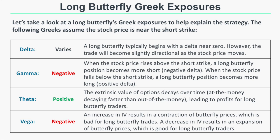Now let's discuss the Greek exposures of a long butterfly, assuming the stock price is near the short strike. If the stock price is not near the short strike — perhaps closer to one of the long strikes — these Greek exposures may not apply. The delta value of a long butterfly spread will typically begin near zero when selling an at-the-money strike and purchasing equidistant long strikes. However, as the stock price moves, the trade becomes slightly directional.